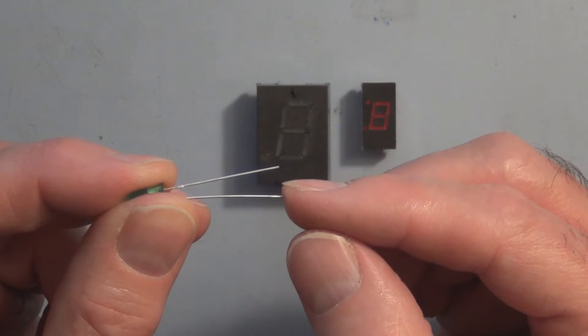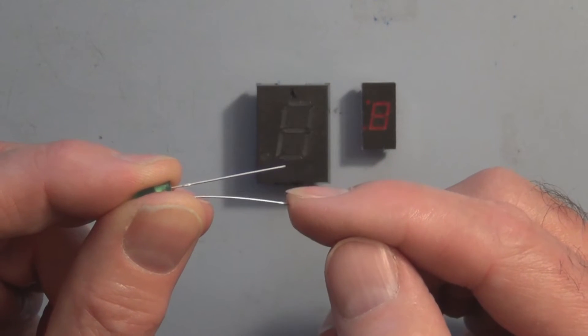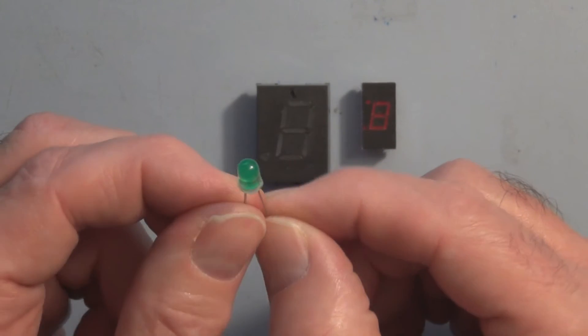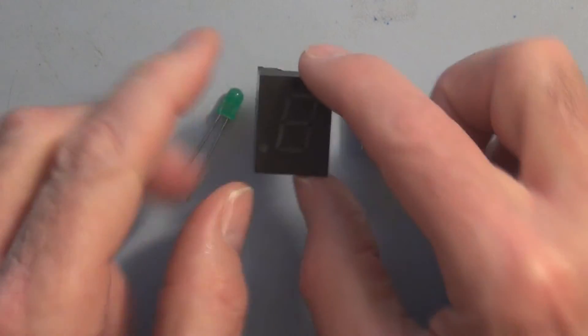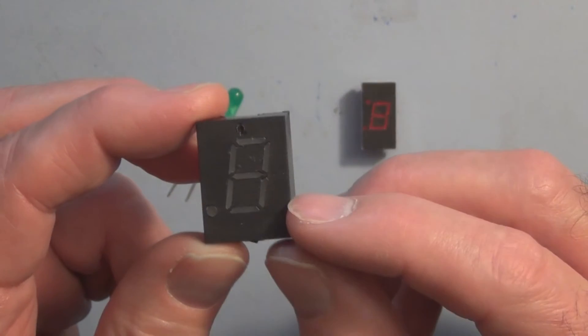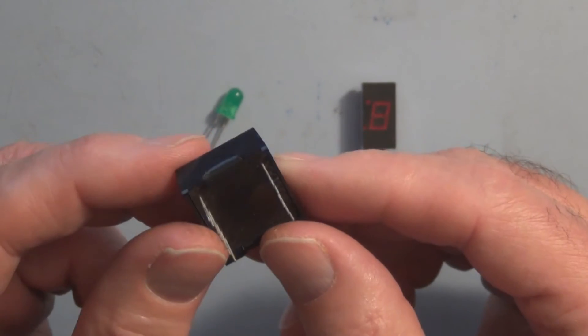We're all familiar with the single two-leaded LED. You've got the shorter lead as the cathode, the longer lead as the anode. If the longer lead is positive with respect to the shorter lead, this will conduct and emit light. This is the same, except there are seven individual LEDs packaged in the single unit.